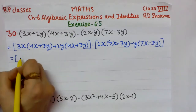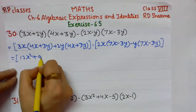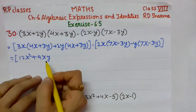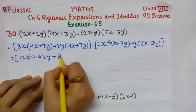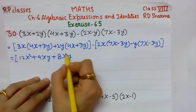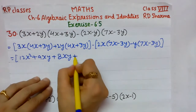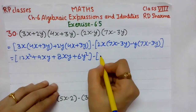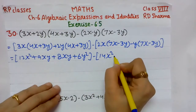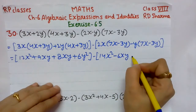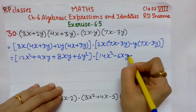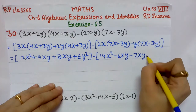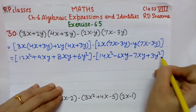Now we multiply: 3×4 = 12, so 12x², plus 3×3 = 9xy (3x multiplied by 4x then 3x multiplied by 3y). Plus 2y into 4x: 4×2 = 8xy, plus 2×3 = 6y². In the second bracket: 2x × 7x: 7×2 = 14x², minus 3×2 = 6xy. Then multiplying minus y: minus 7xy, minus y × minus 3y gives plus 3y².